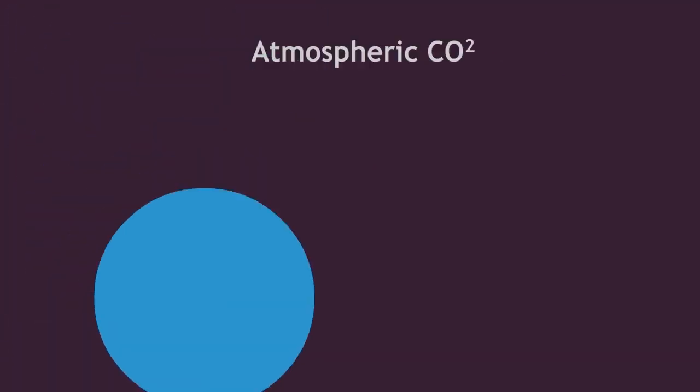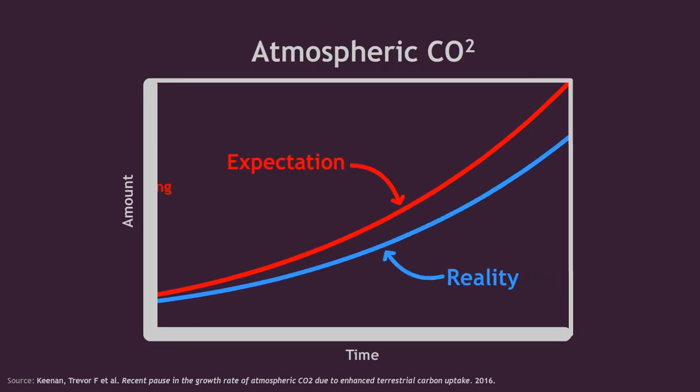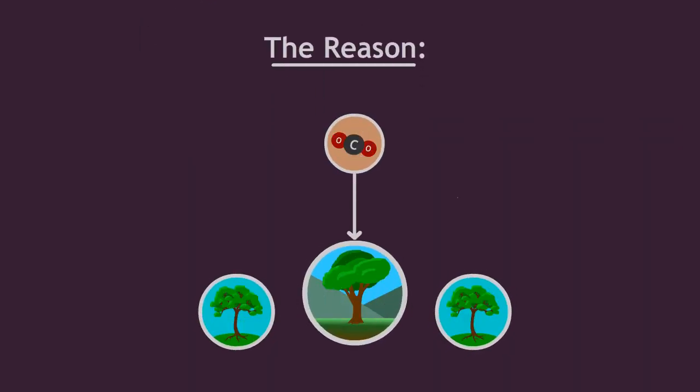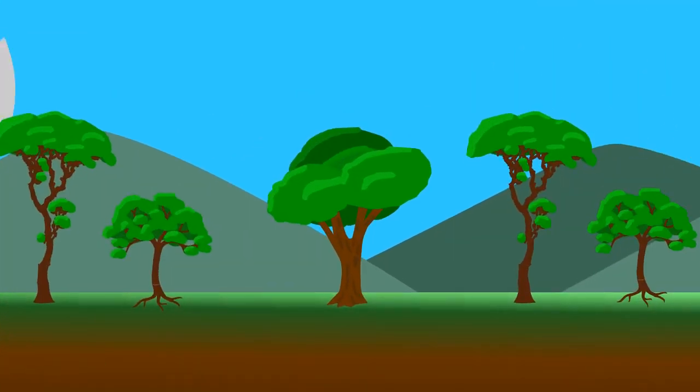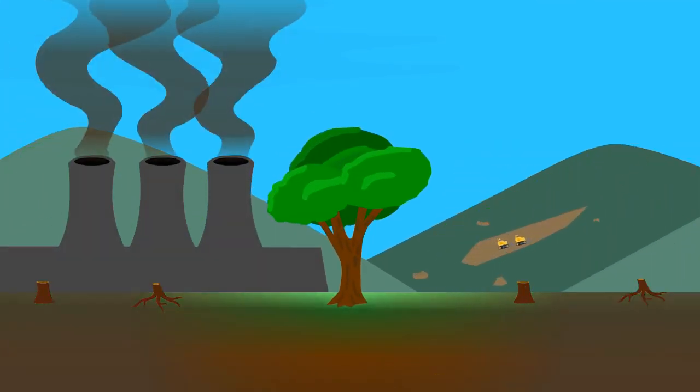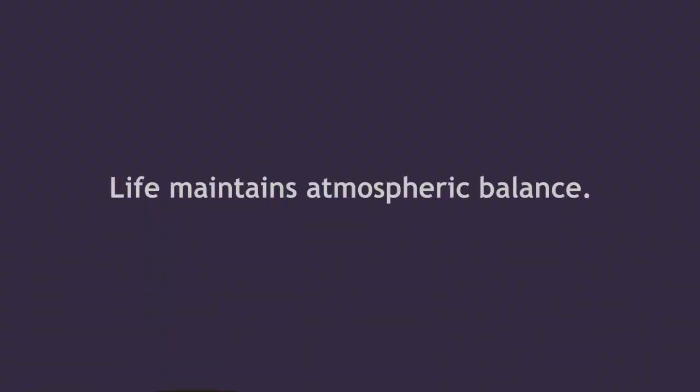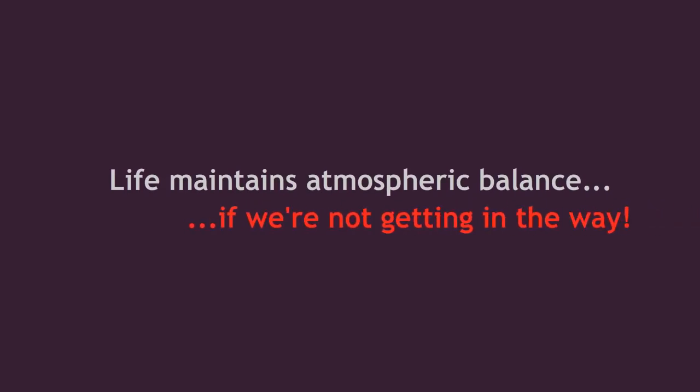So much so that carbon dioxide levels in the atmosphere have been rising slower than would have been expected in models that are based on how much we're emitting. The reason that they increase slower than expected is because the more that there is in the atmosphere, the more the plants take up. Of course, they're not increasing their uptake fast enough to offset emissions, but it points to the capacity for life to maintain atmospheric balance if we're not getting in the way.